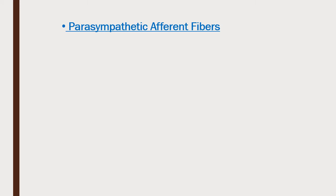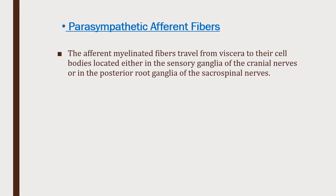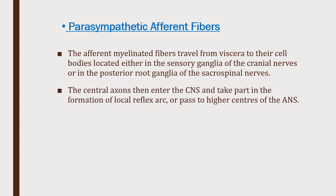Briefly about the parasympathetic afferent fibers, which are sensory fibers important for reflex arcs: these are myelinated fibers that travel from various viscera to their cell bodies, located either in the sensory ganglia of cranial nerves in the brain stem, or in the posterior ganglia of the sacral spinal nerves. The central axons then enter the central nervous system, taking part in local reflex arcs or passing to higher autonomic centers.